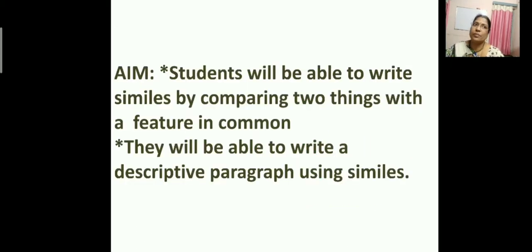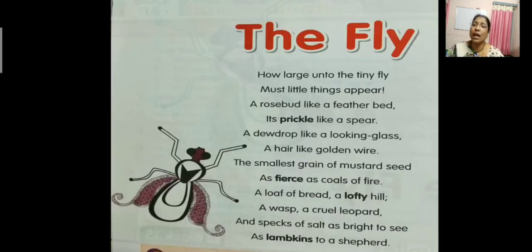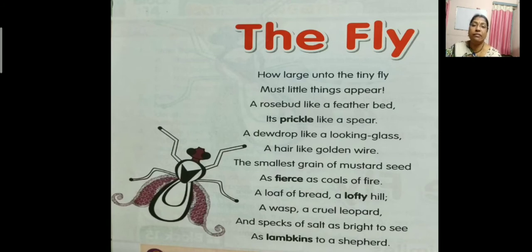At the end of this particular video, you will be able to write similes by comparing two things with a common feature, and also you will be able to write a descriptive paragraph using similes. Now let us read the poem. In this poem we have similes also. In our previous video we have done it. And in today's class we will learn how to write the similes in detail. 'How large unto the tiny fly must little things appear. A rosebud like a feather bed, its prickle like a spear. A dewdrop like a looking glass, a hair like golden wire. The smallest grain of mustard seed as fierce as coal of fire.'